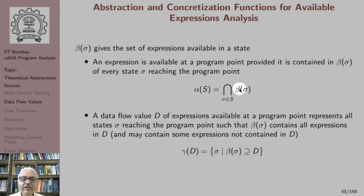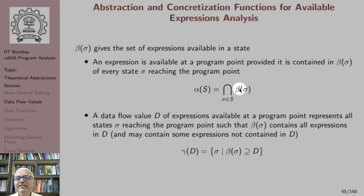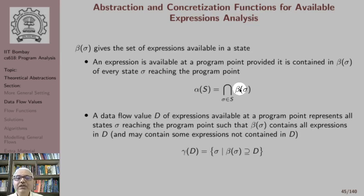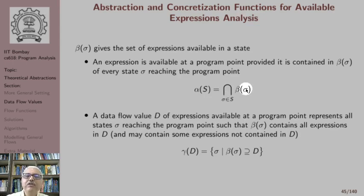The abstraction function for available expressions analysis takes the instrumented sets of expressions in each state in S, takes their intersection, and that gives us the set of expressions available along every path reaching that program point — assuming S represents the set of states reaching along all paths. So alpha computes an intersection of all representation functions.